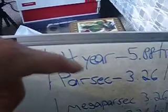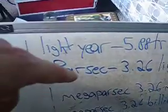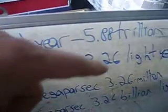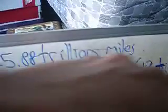So first of all, one mile is 5,280 feet. One light year is 5.88 trillion miles rounded. Then you have one parsec, which is 3.26 light years, or 19 trillion miles.